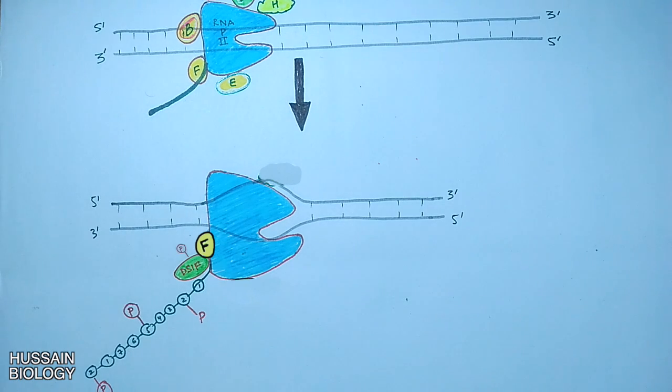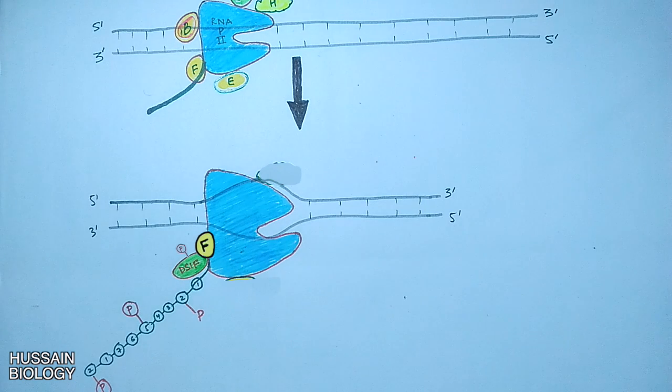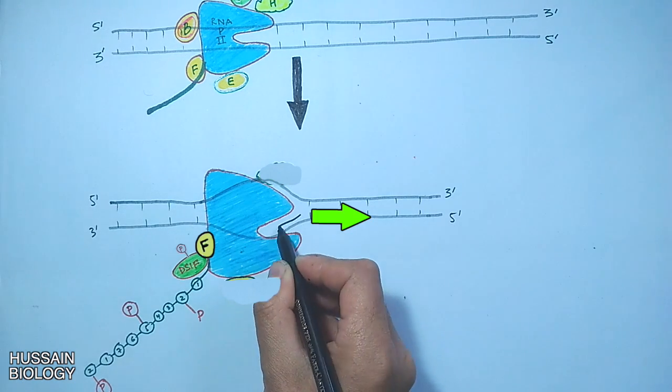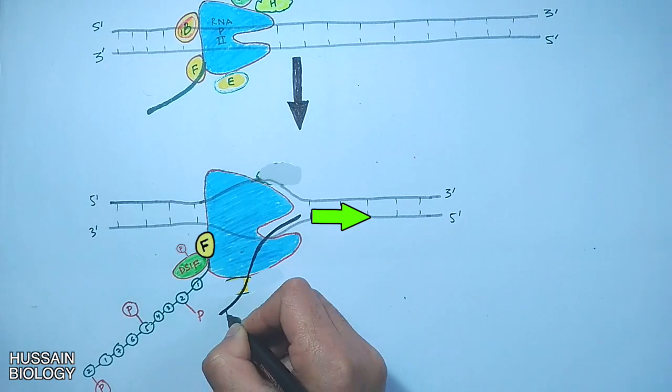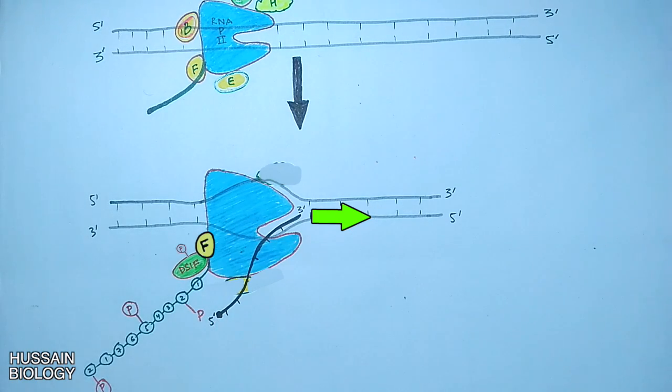Moving forward, now when all the elongation factors bind, the polymerase moves on template strand from 3 prime to 5 prime end and we get the mRNA molecule synthesized in 5 prime to 3 prime end as shown in the diagram.